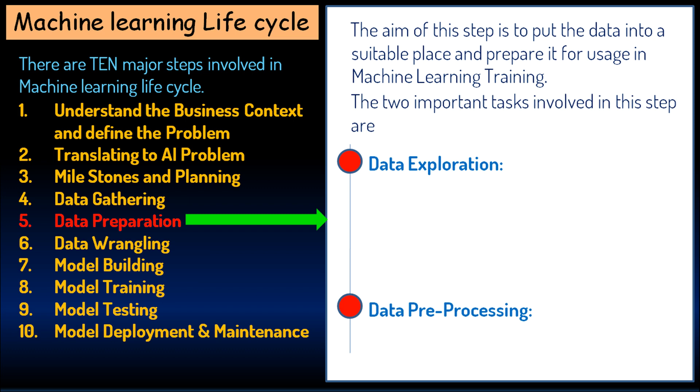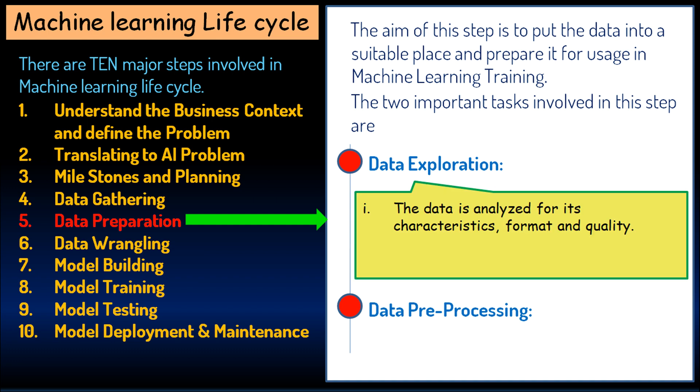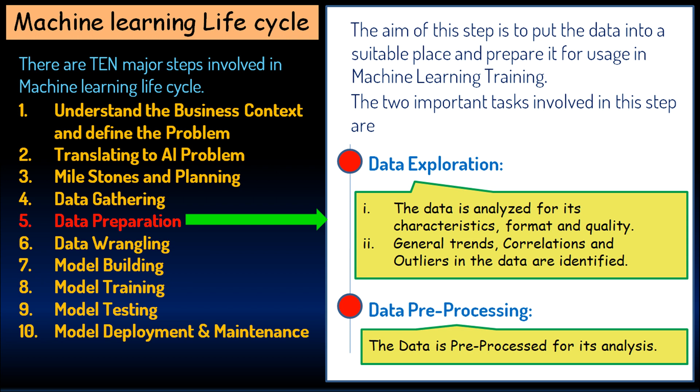Coming to data exploration, the data is analyzed for its characteristics, format, and quality. General trends, correlations, and outliers in the data are identified. In data preprocessing, the data is preprocessed for its analysis.